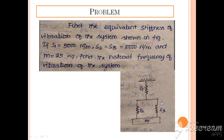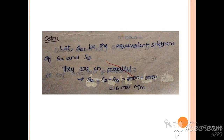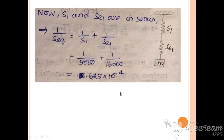First, we deal with springs S2 and S3 connected in parallel. To find the equivalent spring stiffness, we use the formula S2 + S3, so 8000 + 8000 = 16000 N/m.